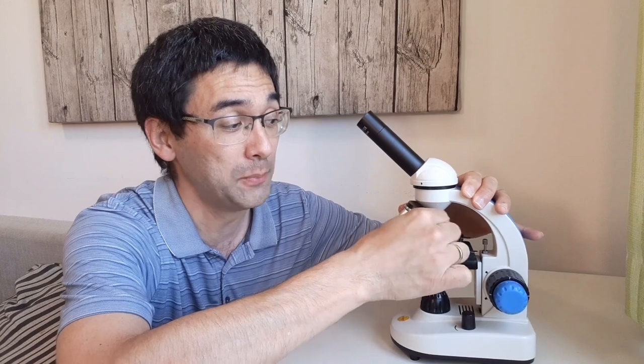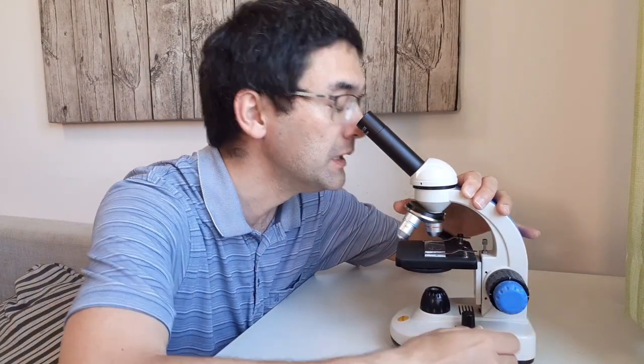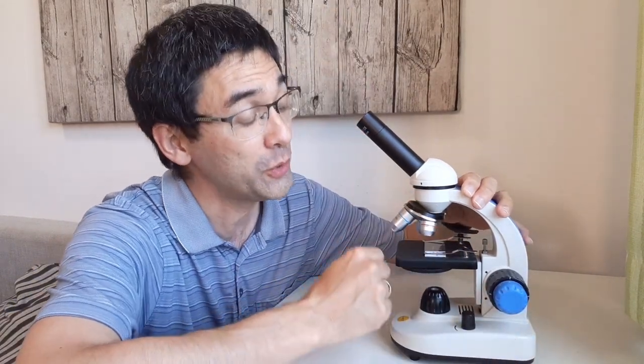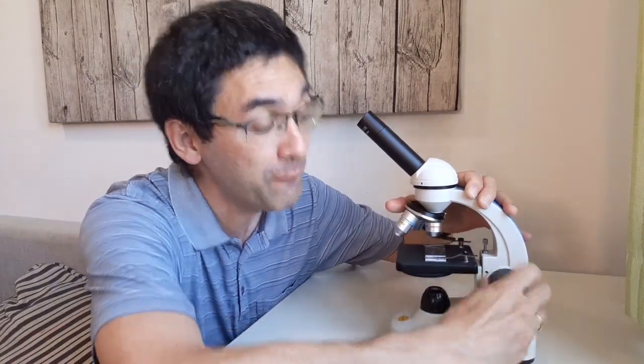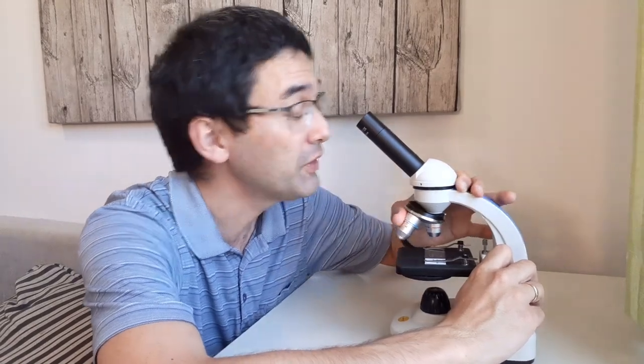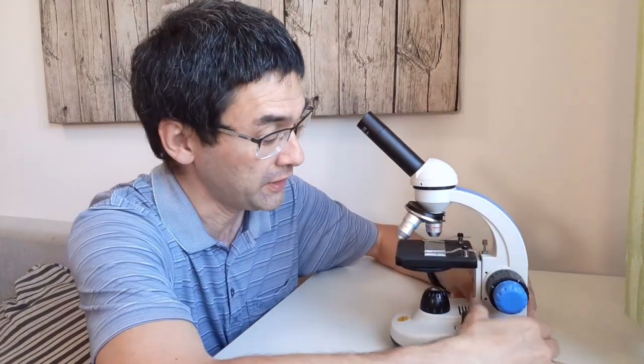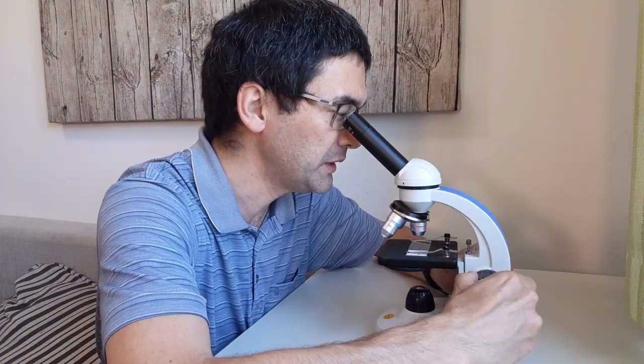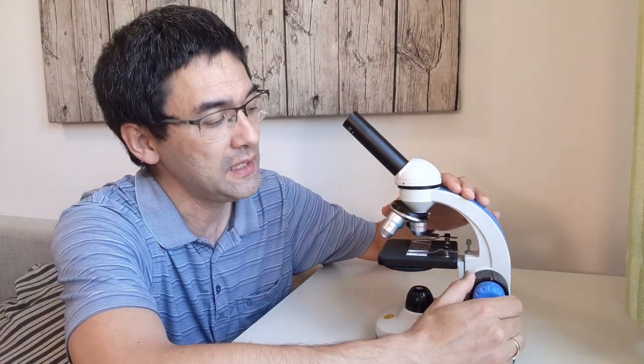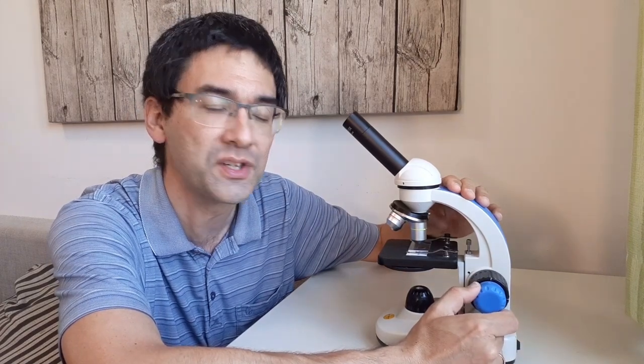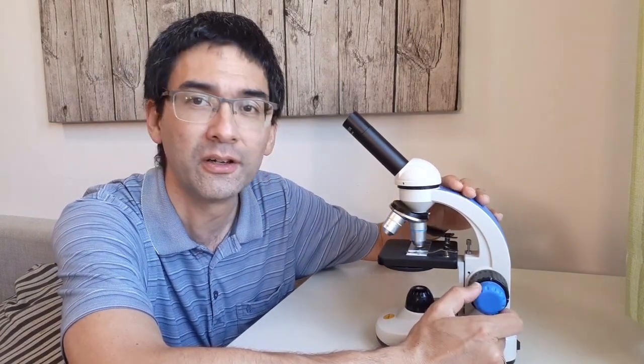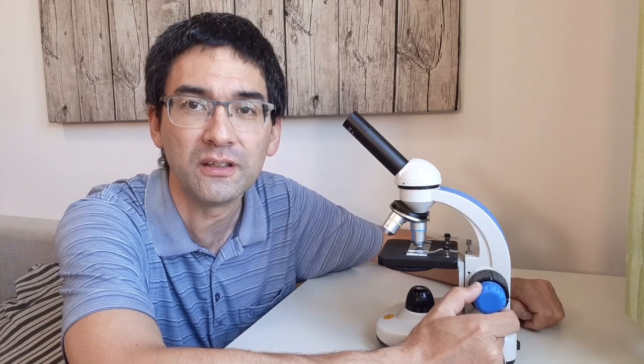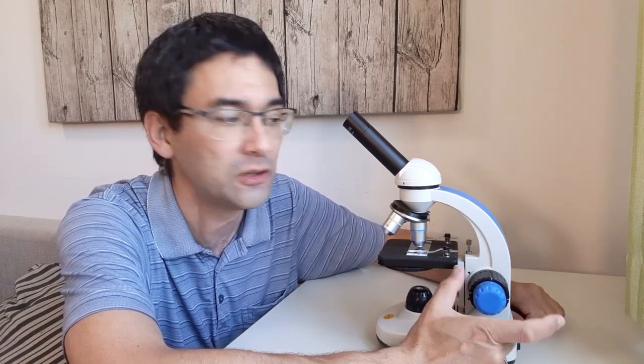So if you lose the focus again, it's totally blurry, I don't see anything. Well, then you do the following. You go back to the smallest four times objective. You raise the stage again. You look through it and you lower it until it's in focus. And that's it. Don't use the coarse focus knob when you have a high power objective in position because otherwise you risk crashing the objective into the slide.